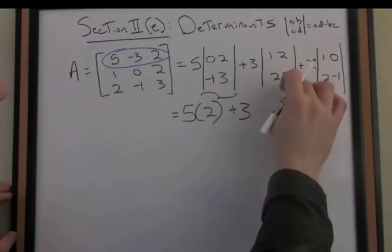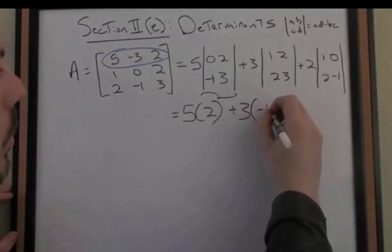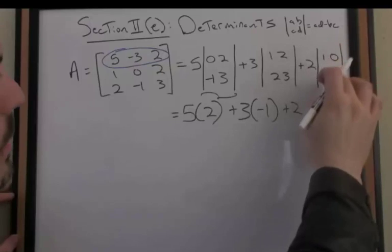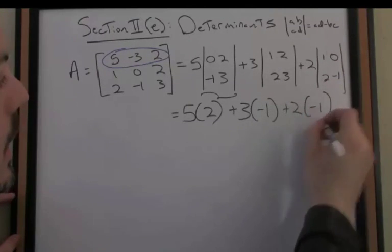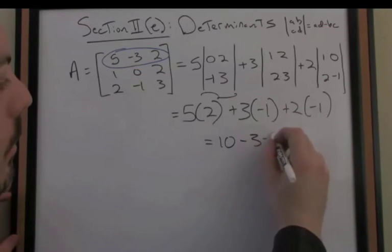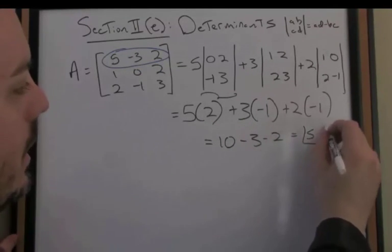Plus 3 times AD, which is 3, minus 4 is negative 1, and lastly we have plus 2, AD minus BC is negative 1, so we have that here. And let's add these numbers up, we get 10, minus 3, minus 2, and that results in 5.